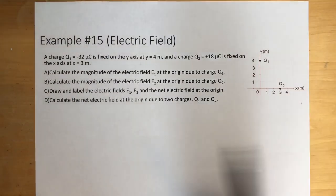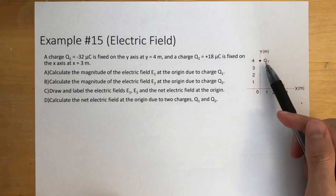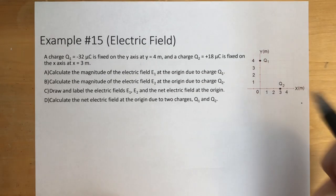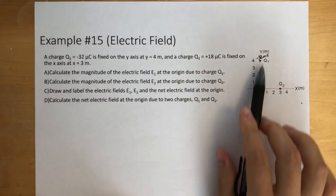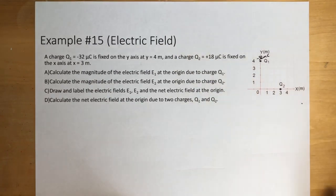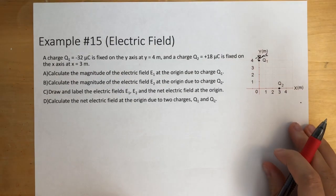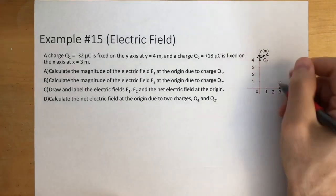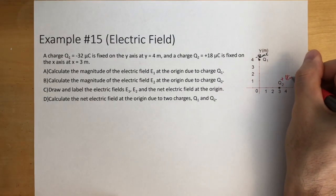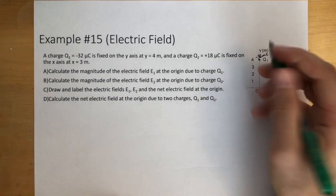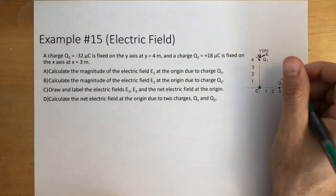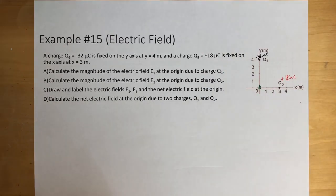Now let's look at the next problem. A charge Q1 of negative 32 microcoulombs is on the y-axis at 4 meters, and Q2, which is positive 18 microcoulombs, is fixed on the x-axis at 3 meters. Calculate the magnitude of the electric field E1 at the origin — the origin is right here — due to charge 1.